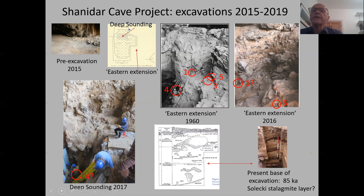We've been working at the cave since 2015. This is how it appeared as we started. This is the Ralph Solecki plan. We've concentrated on the eastern extension because this is where he found most of the Neanderthals. The 1960 picture shows the locations of Shanidar 1, 3, and 5 marked, and Shanidar 4 down below. The ranging poles we placed at exactly the same location — so 1 was about there, 5 was there.